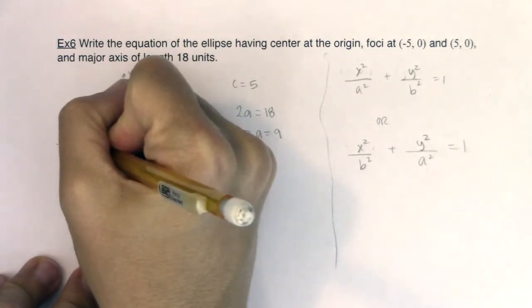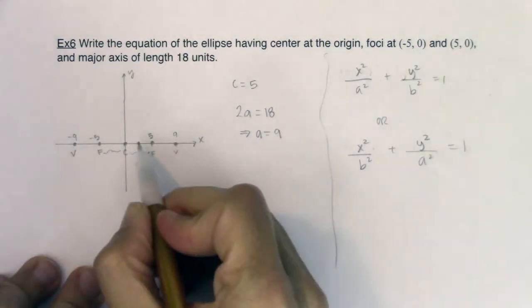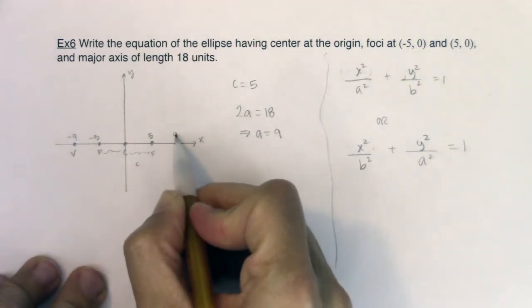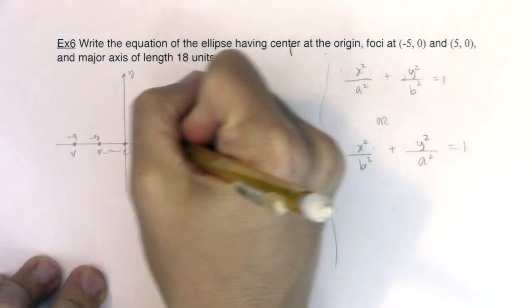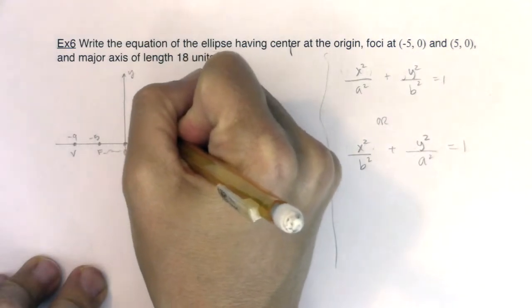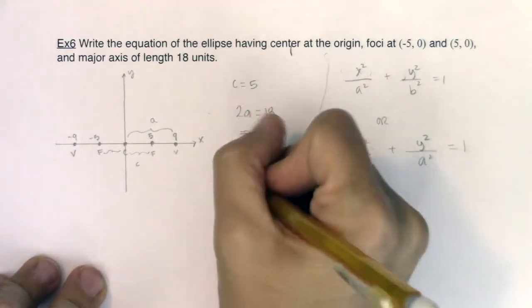And I also have one down here at (-9, 0). Here's my other vertex. And that distance is supposed to be the number 9. This distance is always a units. So I've got c is 5, a is 9.